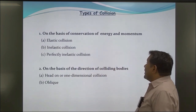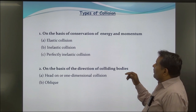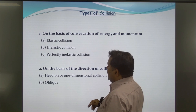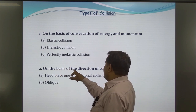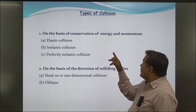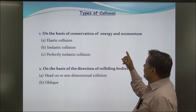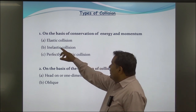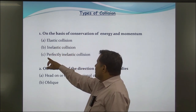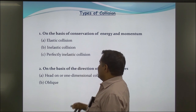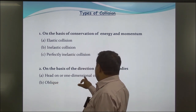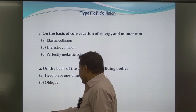Types of Collision: There are two bases for classifying collisions. First, on the basis of conservation of energy and momentum: there are three types — elastic collision, inelastic collision, and perfectly inelastic collision. Second, on the basis of the direction of the colliding bodies: there are two types — head-on (one-dimensional) collision and oblique collision.